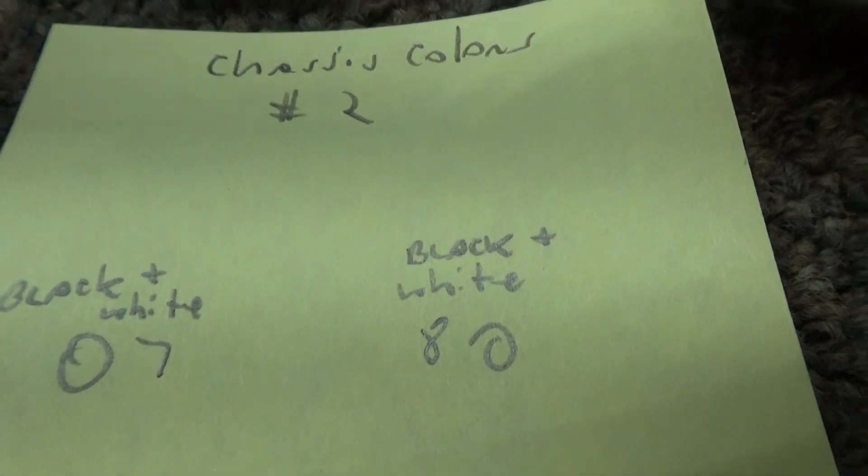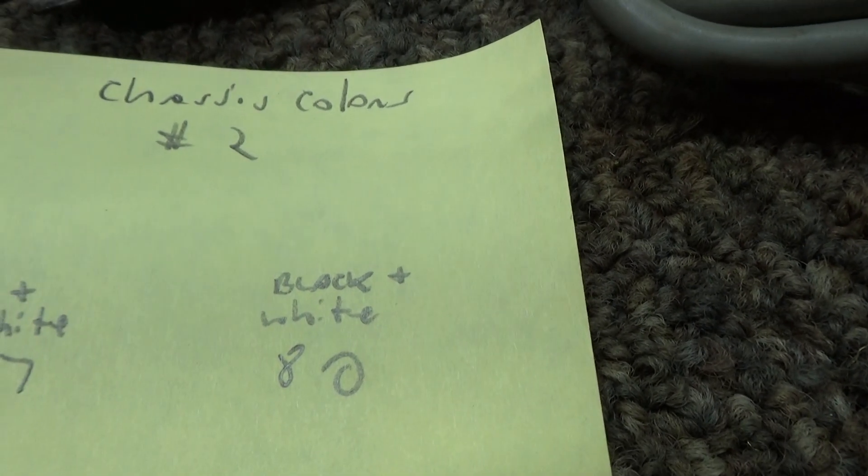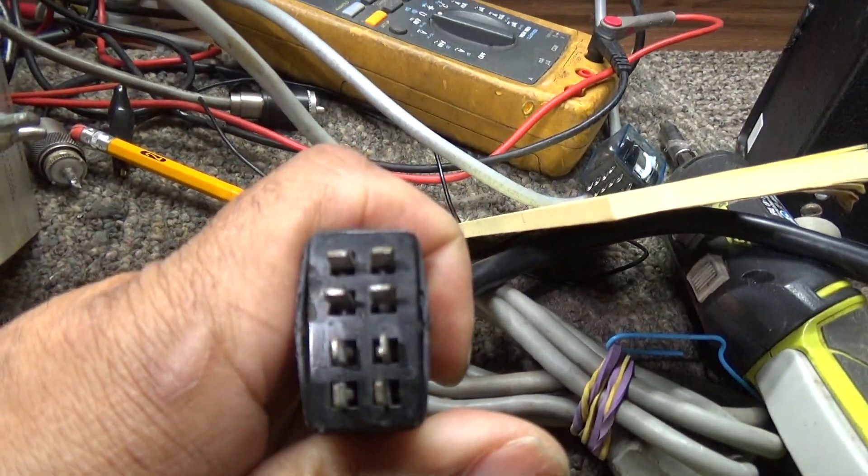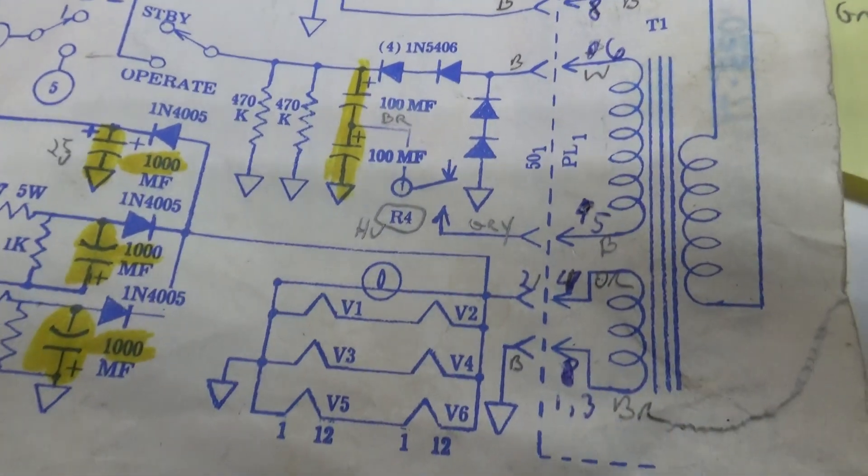And then this one has a black and white wire for seven and another black and white wire for eight. So anyway, that's the pinout for the Palomar 300a chassis wiring. And that's all I wanted to show for this one. I'll just sit it on this for a second. Okay, that's it for this one. Hope it helps.